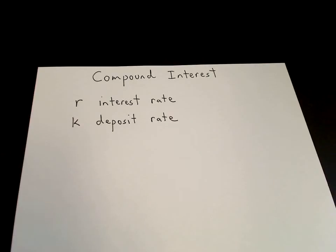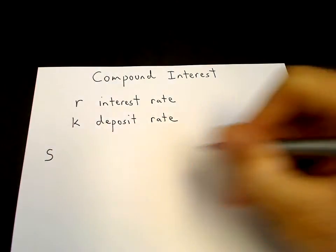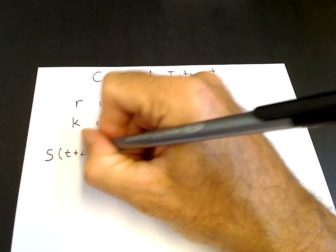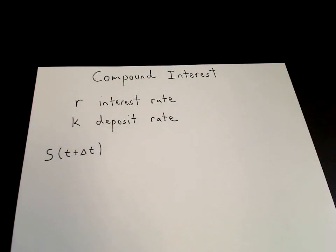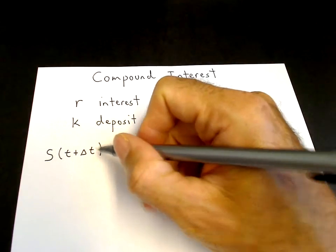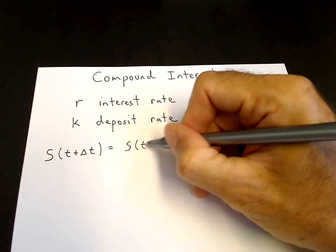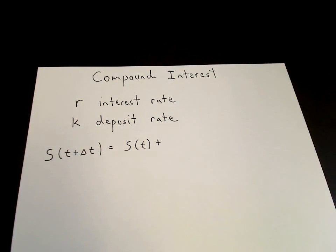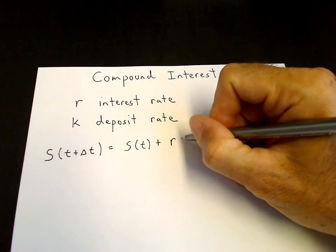We start with an equation for the amount of money we have in the account at time t plus delta t. Delta t is the time interval after which interest is awarded and after which you deposit a certain amount of money. The amount of money at time t plus delta t equals the amount at time t plus the interest received over the interval delta t — that's the interest rate r times delta t.